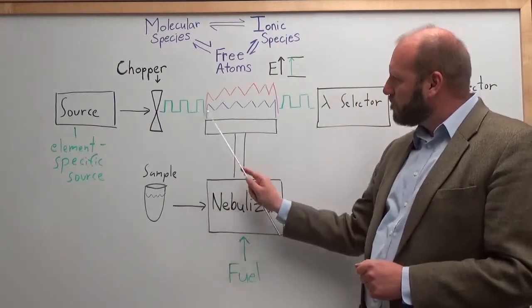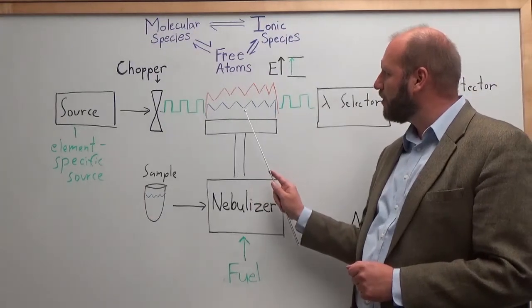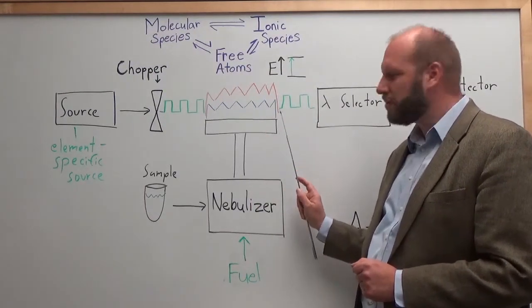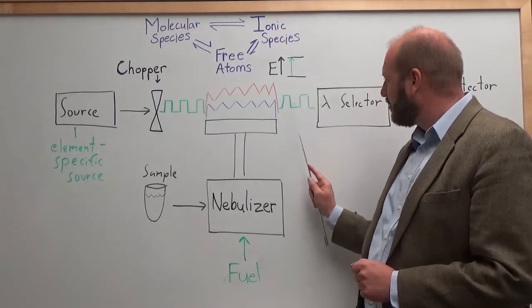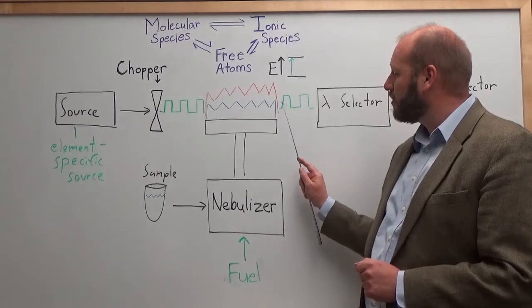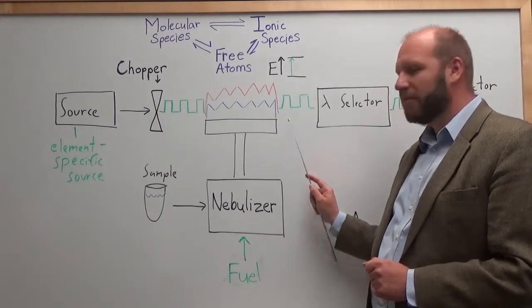So, this modulated source now enters our flame where our free atoms will absorb some of that light causing a decrease in the signal. Outside of the flame, we have our modulated light coming out after the absorption along with light from the flame as well.